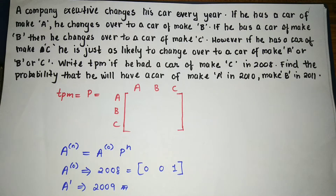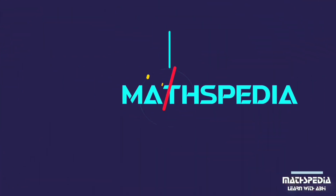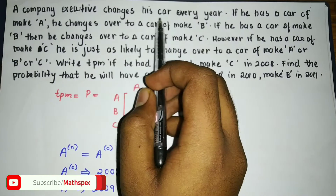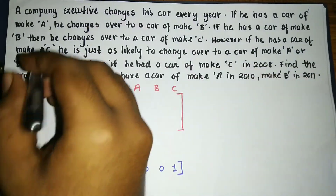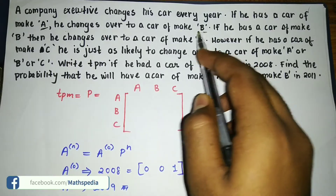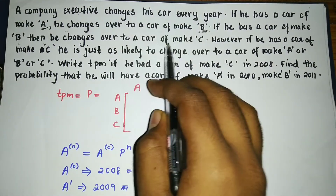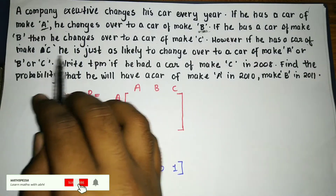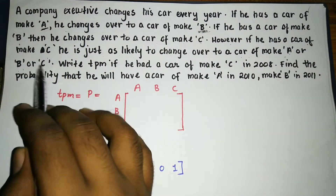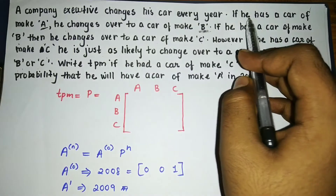In this video we will take up one more problem based on Markov process TPM — Transition Probability Matrix. The question is: a company executive changes his car every year. If he has a car of brand A, he changes over to brand B. If he has a car of brand B, he changes over to brand C. However, if he has a car of brand C, he is just as likely to change to brand A, B, or C.